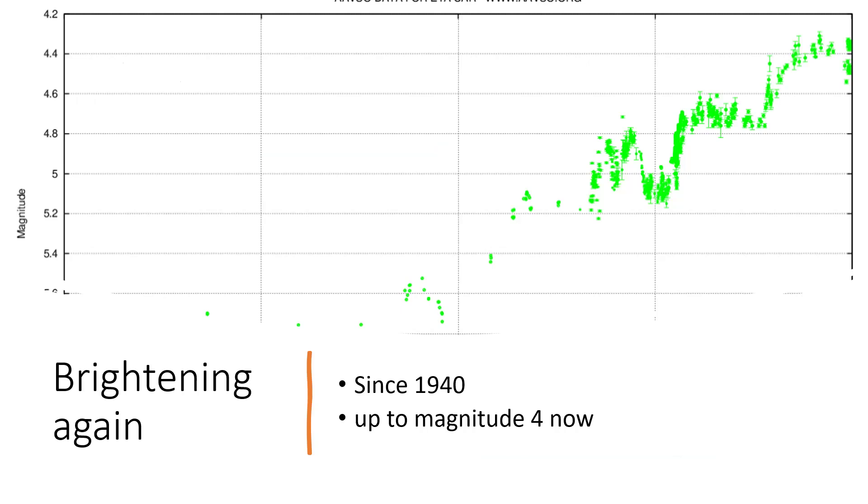And it's doing it again, because since about 1940 it's been getting brighter. You can see part of the light curve here. It's coming up to around magnitude four now, having been just on the verge of naked eye visibility in 1940, and the brightening's just continuing in a slightly erratic manner, but it's definitely showing signs that there's activity there.